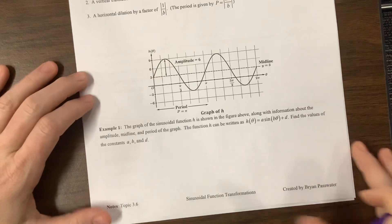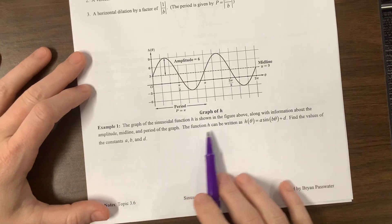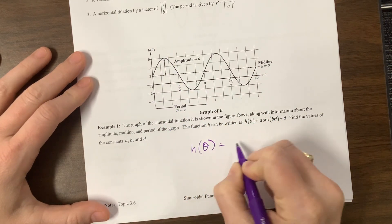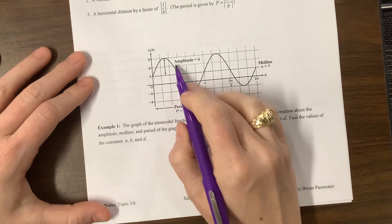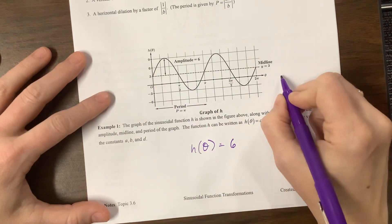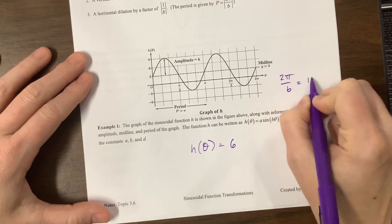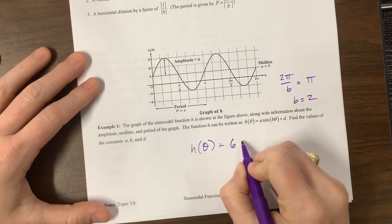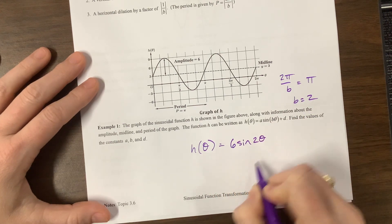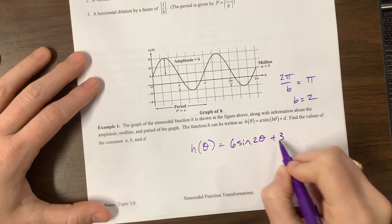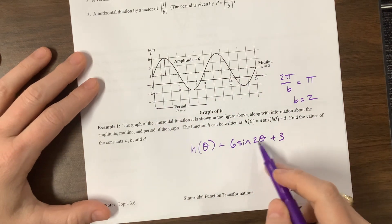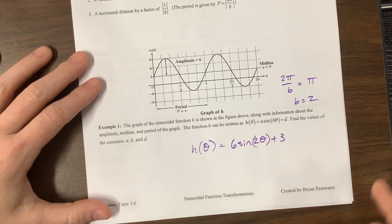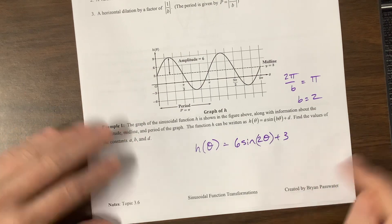Let's look at this first example. The function can be written as this. Find the values. The amplitude is 6, so h of θ would equal 6. Notice we started at the midline, and then our period is π. So we have 2π over b is equal to a period of π. That means that b is equal to 2. So we have sine of 2θ, and then our midline here is at 3 plus 3. Technically, mathematically, you don't have to put these in parentheses. He did, which is great. Sometimes you have to because of the technology, but not because of math notation.